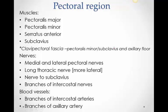In the pectoral region, the main muscles we'll look at are pectoralis major and serratus anterior. Pectoralis minor is rather small and subclavius is even smaller and hardly has any action. We'll also look at a deep fascia called the clavipectoral fascia. We'll look at nerves in this area and their branches — we already looked at intercostal arteries when doing the thoracic cage. Now we'll look at the axillary artery in a little more detail.